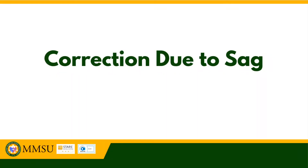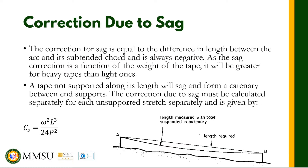Hello and welcome. For this video, I am going to talk about correction due to sag. This is still a topic on correction on taping, as we are talking about measurement of horizontal distance. Correction due to sag occurs when the tape is suspended — nagkakaroon ng sag yung tape natin kapag iniingat natin kapag suspended yung tape. This is true when the terrain is rough, kapag hindi natin pwedeng ilapat yung tape.